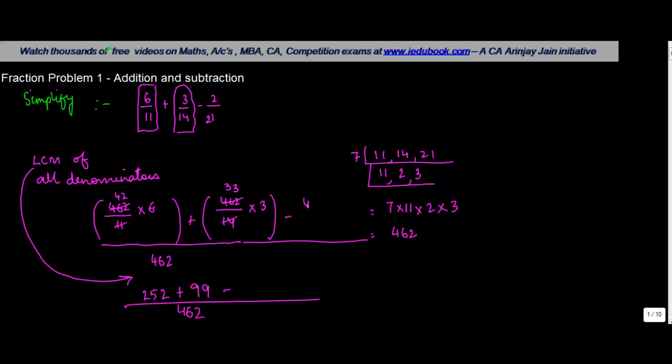Minus, again, 462 divided by 21 into the numerator 2. So 21, 2 times, 4 carried, again 2 times, 22 into 2 is 44.